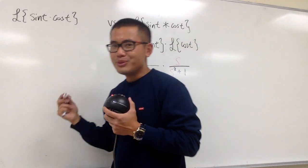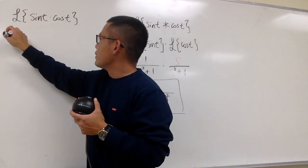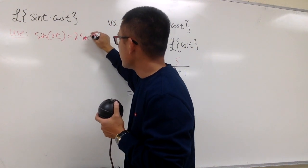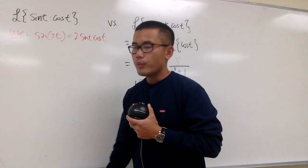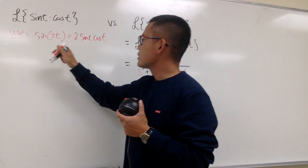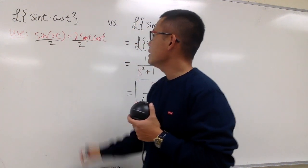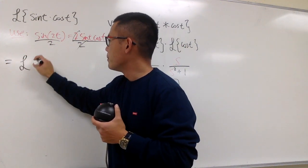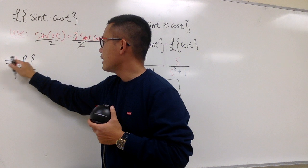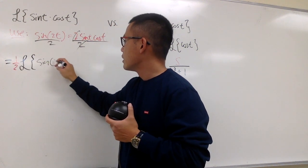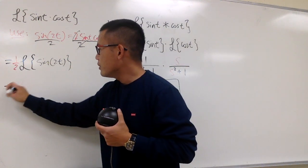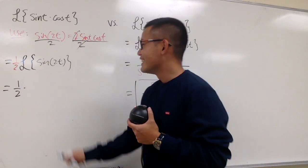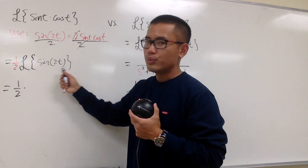When we have sine cosine, we should utilize the identities. This right here seems really close to the double angle formula. So we are going to use: sine 2t equals 2 sine t cosine t. I want sine t cosine t, so divide both sides by 2. This is the same as the Laplace transform of one half times sine 2t — putting the one half in front.